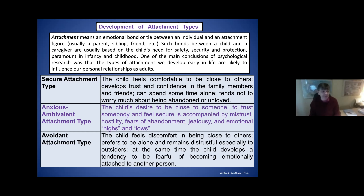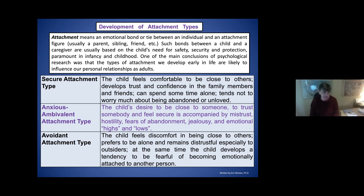In psychology we distinguish many types of attachments. The most common classification: secure attachment type — we're comfortable with others, sad when friends leave, with trust, but understanding that trust has limits. We have confidence in most people but not all. We can spend some time alone but not all the time. This is the secure attachment type — it's a relatively healthy type.